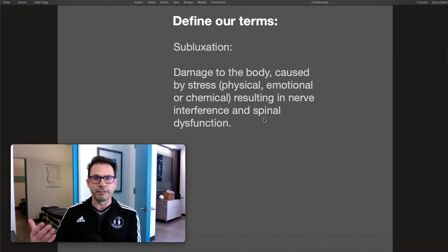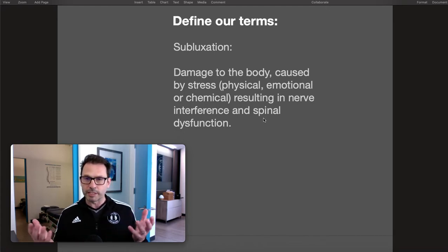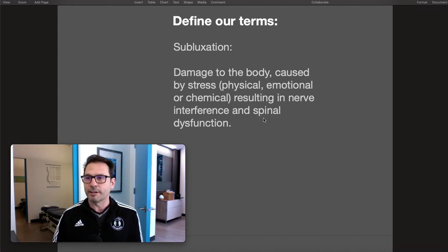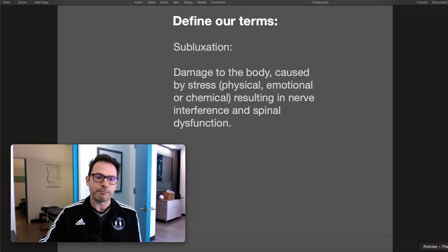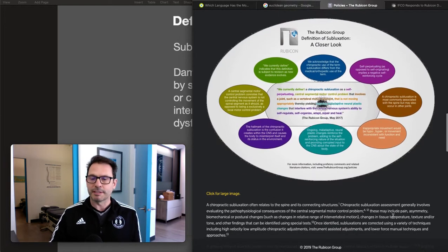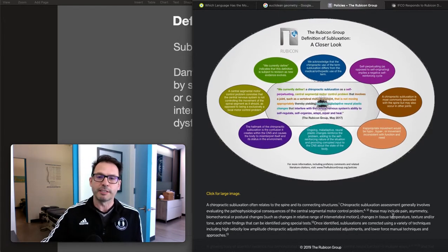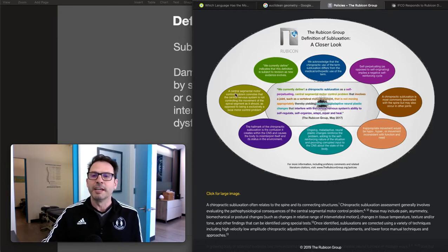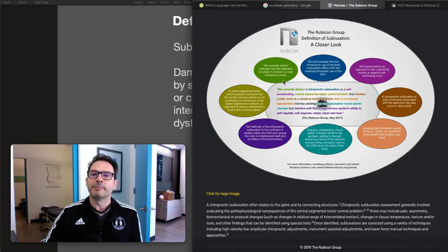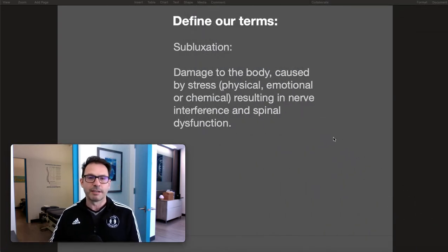So when we define the term subluxation, before we decide whether it exists, we have to define what it is. The Rubicon Group went through this and came up with a big long definition — I think it's the best so far. Even in their definition it says 'we currently define' because it's subject to revision, which is good science.